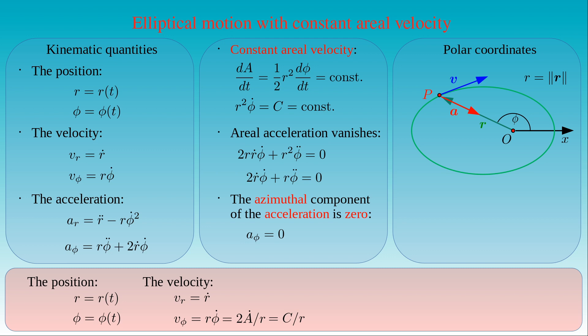The radial component of the acceleration of the body is equal to R double-dot minus R times the square of phi-dot, whereas its azimuthal component vanishes. The second term of the radial component can be expressed in terms of the aerial velocity as four times the square of A-dot divided by the cube of R. This is a general expression for elliptic motion. For the constant aerial velocity, we can write the radial component of the acceleration as the derivative of the radial velocity with respect to time.